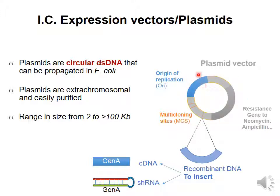There is an origin of replication that bacteria uses to replicate the plasmid in multiple copies. There is always a resistance gene that provides resistance to a particular antibiotic whenever the bacteria acquires this plasmid.